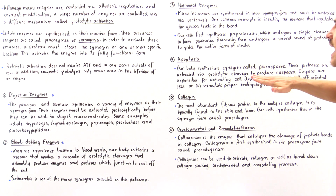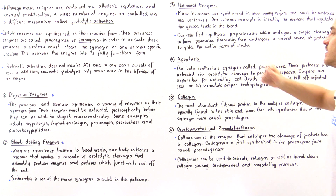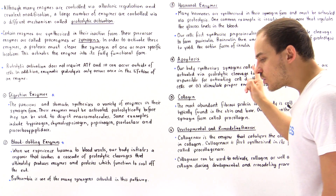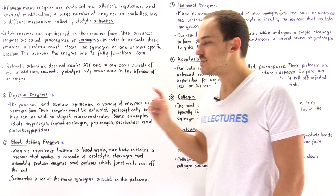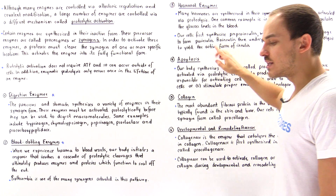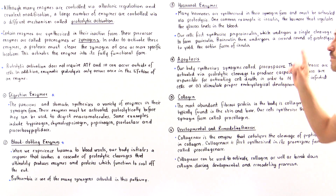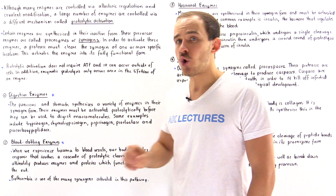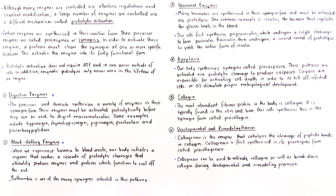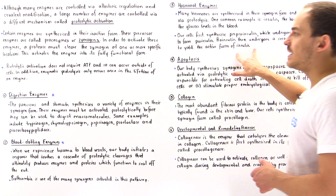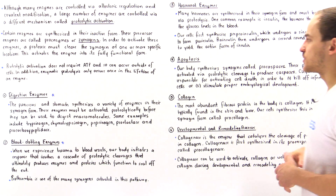Our cells first synthesize insulin in the pre-pro-insulin form. Pre-pro-insulin undergoes a single proteolytic cleavage to produce pro-insulin, but pro-insulin is not yet fully functional. Pro-insulin then undergoes two additional proteolytic cleavages to form the active form known as insulin, and only then can insulin elicit its response.